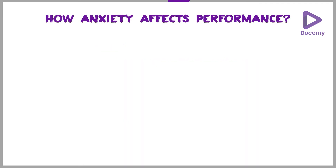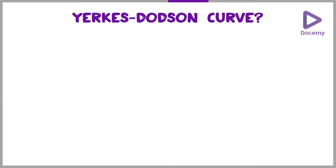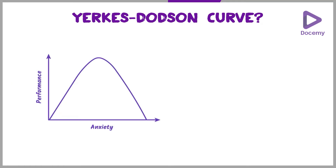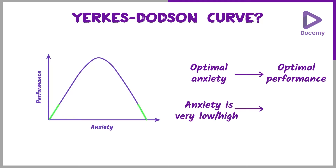It is given by a curve known as the Yerkes-Dodson curve. What does this curve say? This curve says that when you plot anxiety with performance level, optimal anxiety is needed for optimal performance. When the anxiety levels are optimal, your performance is also optimal at the peak levels. But on either side, when anxiety is very less or very high, our performance tends to go down.